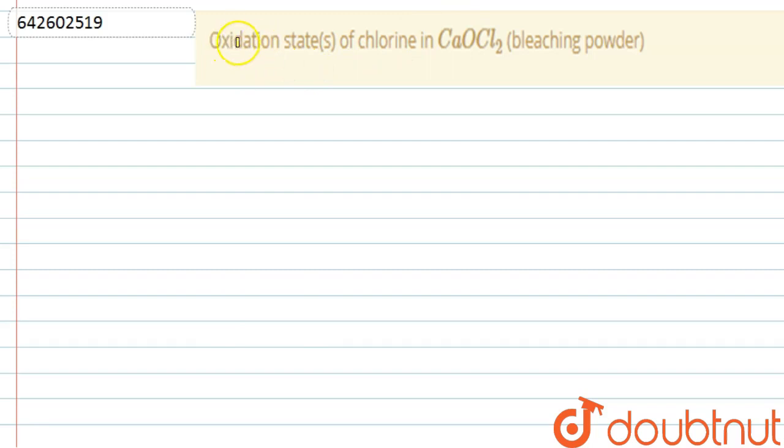The question says: oxidation states of chlorine in bleaching powder, that is CaOCl₂. Now we are given CaOCl₂, that is our bleaching powder.